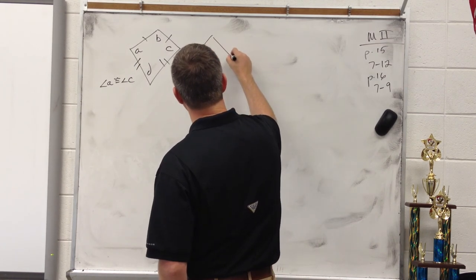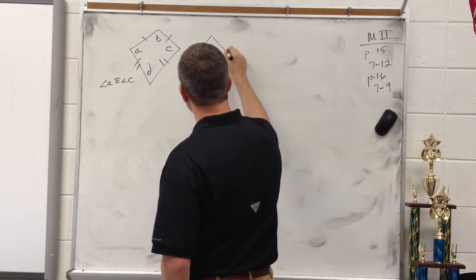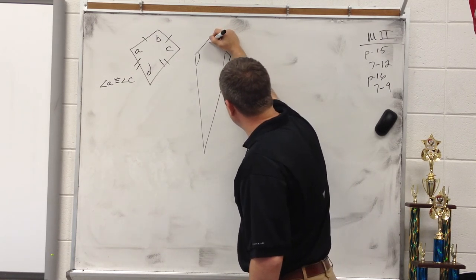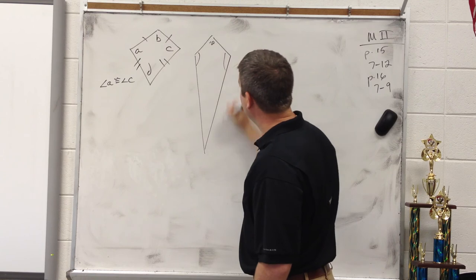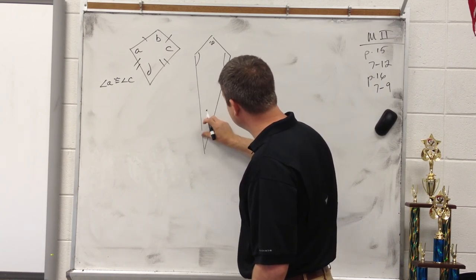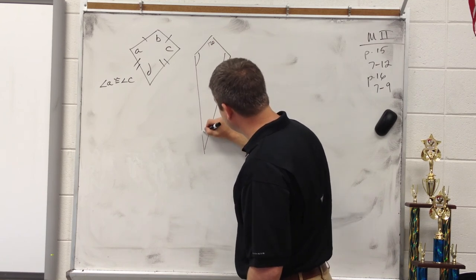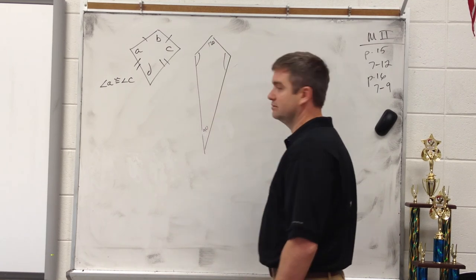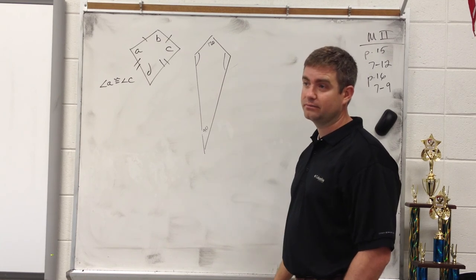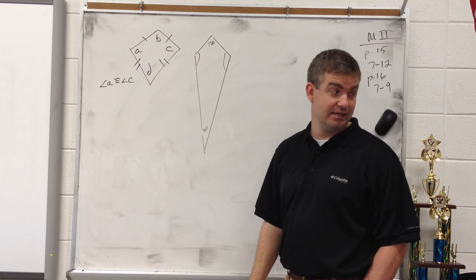If I draw a kite like a shield, it's obvious that B and D are not congruent — say this angle is 20, this one is 120, and this one is 30. What do all four angles have to add up to? 360, because it's a quadrilateral.